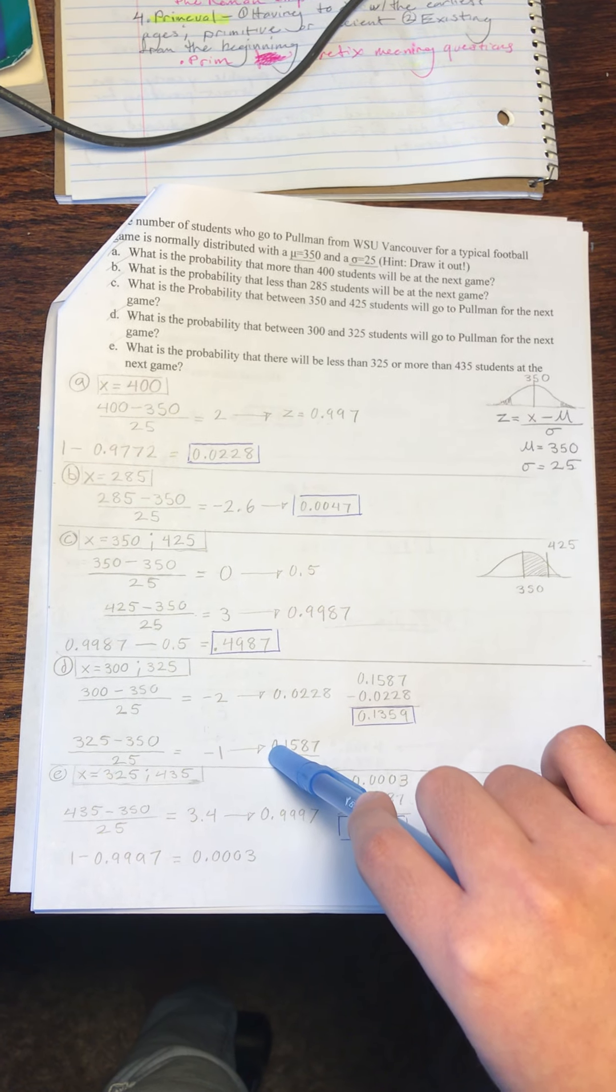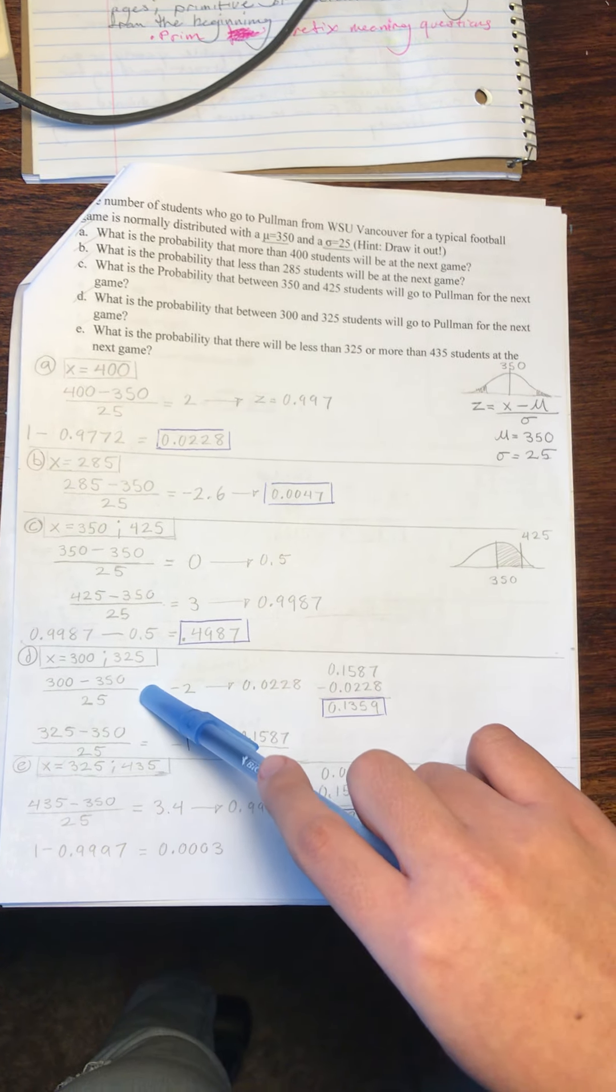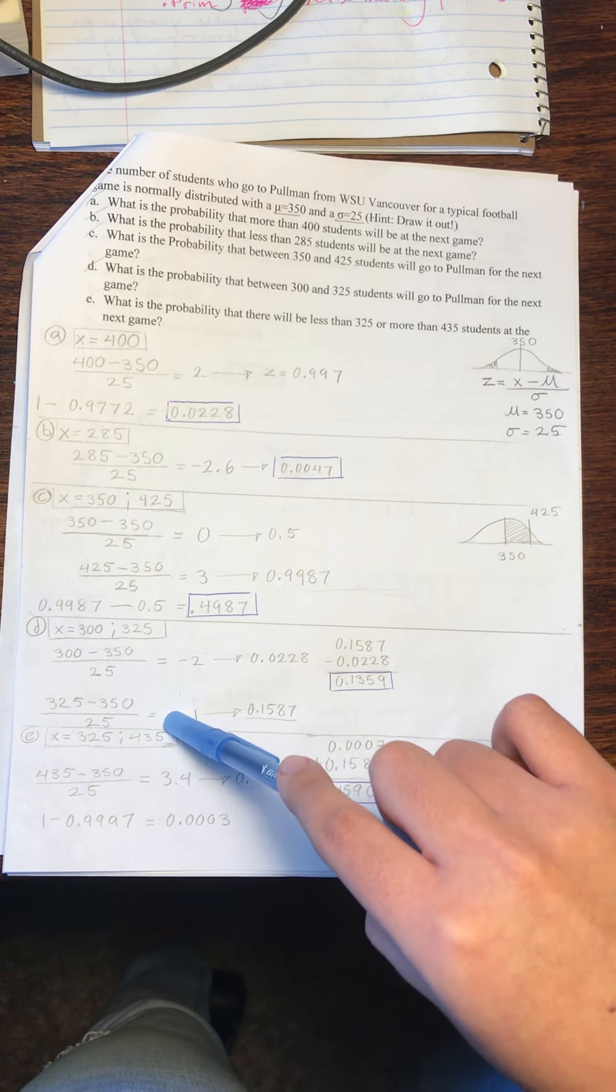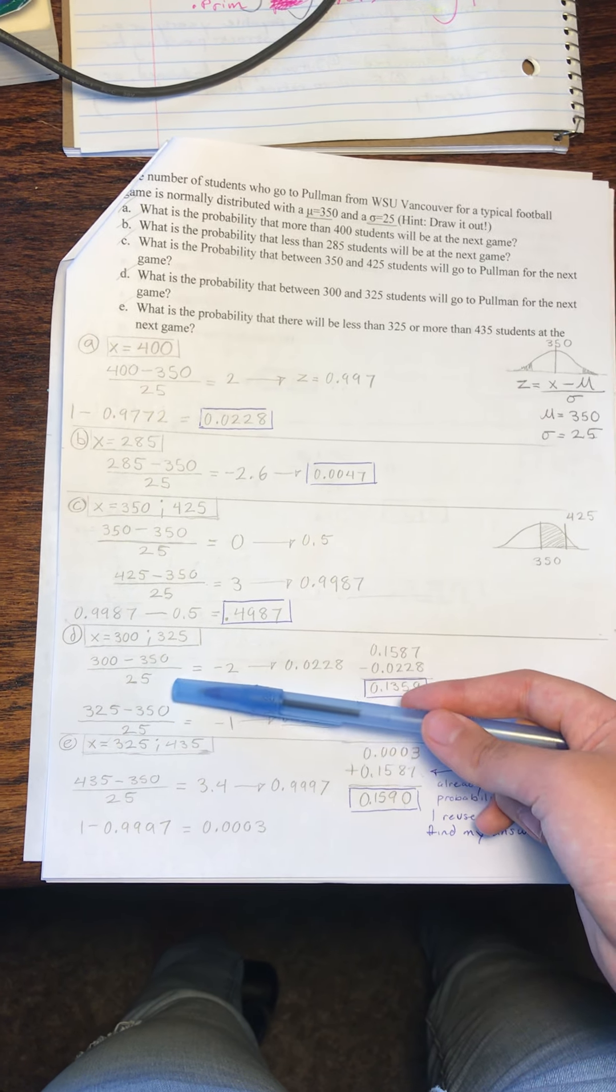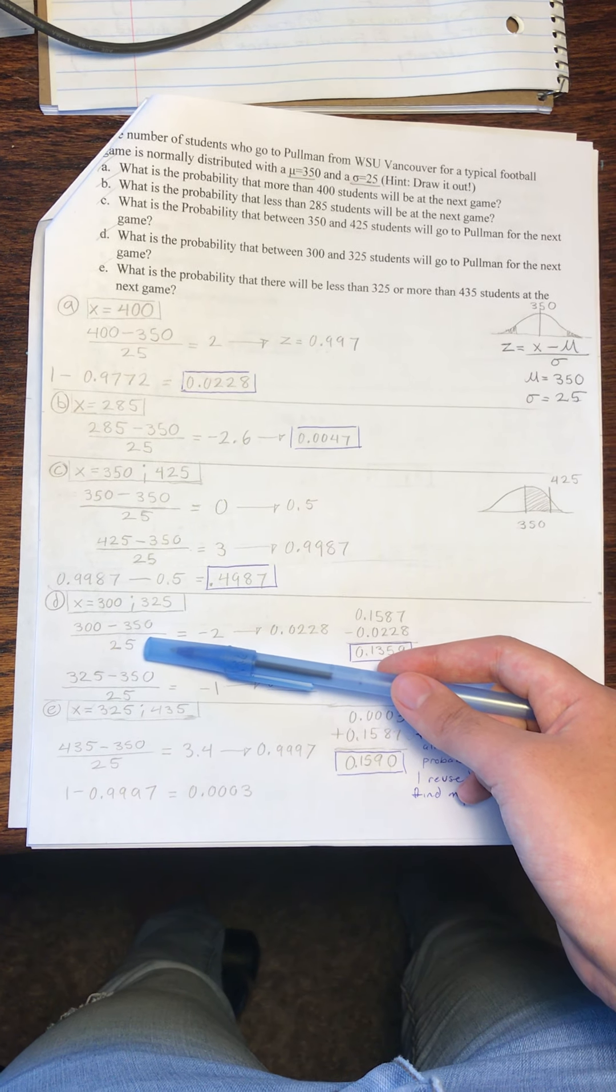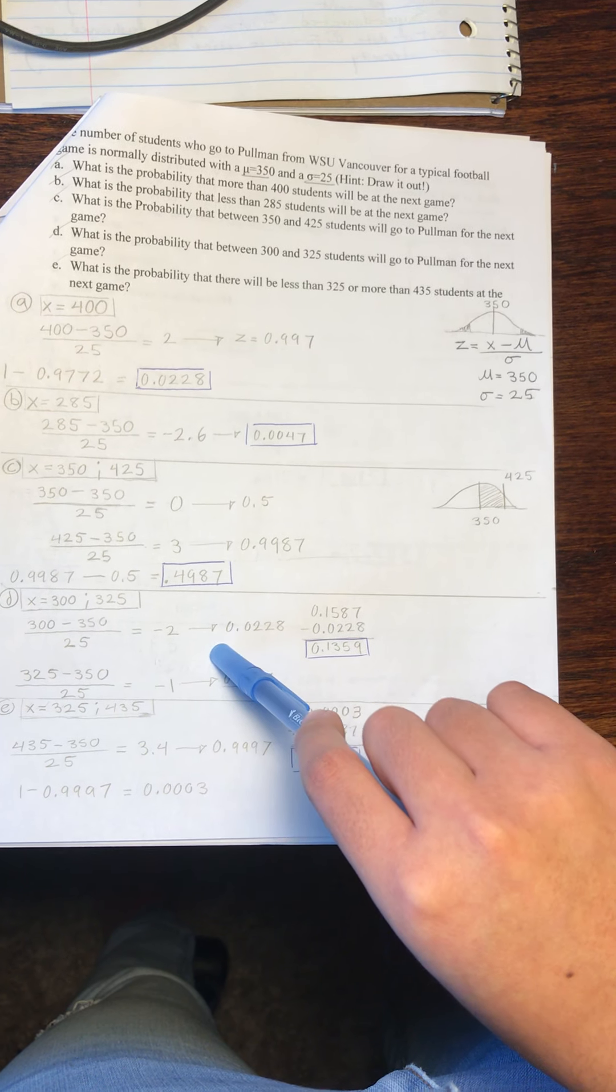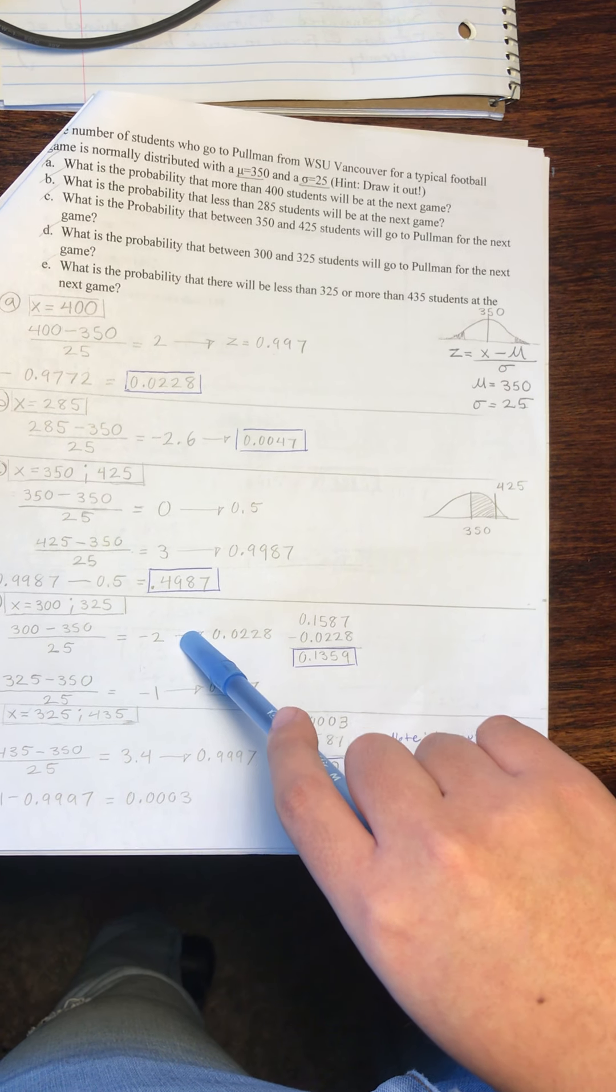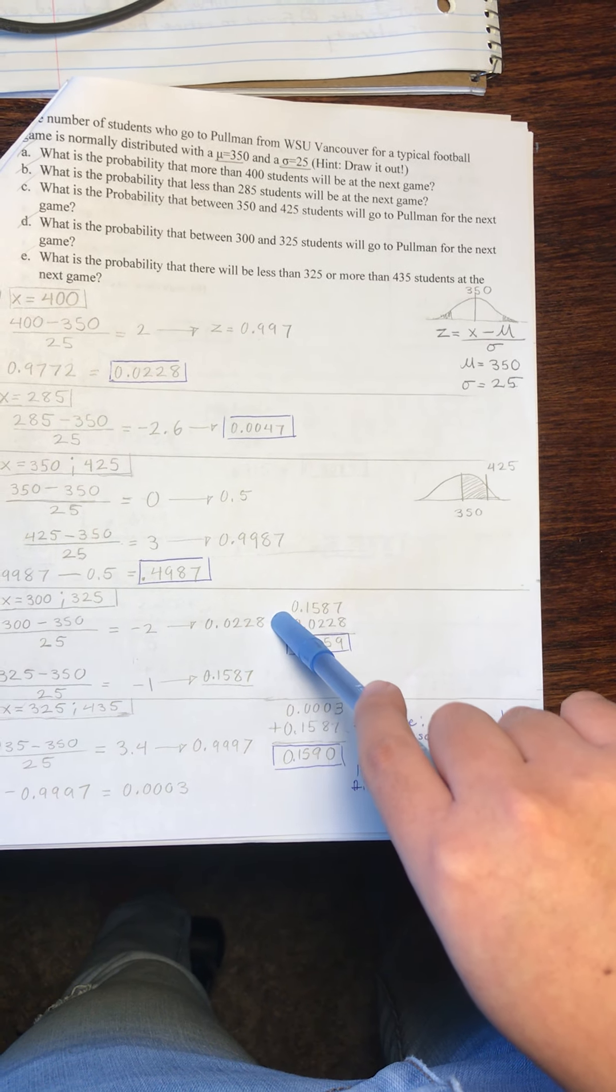For D, we once again have two values, 300 and 325, and we will likewise solve them in two equations. For the first one, we will take 300 minus 350 over 25, that gives us negative 2. When we look that up on our z table, that gives us 0.0228.